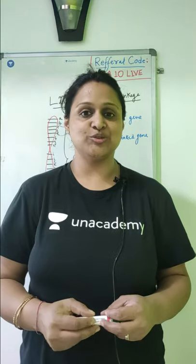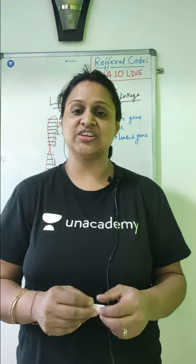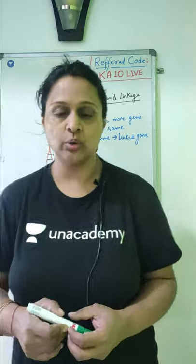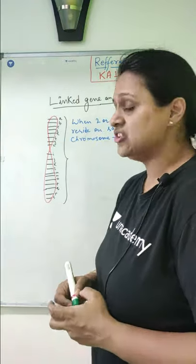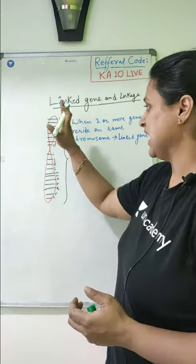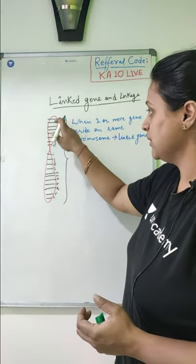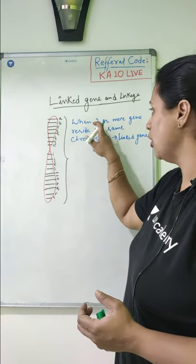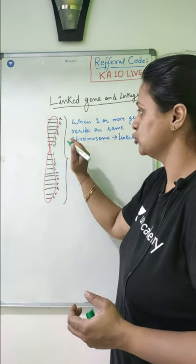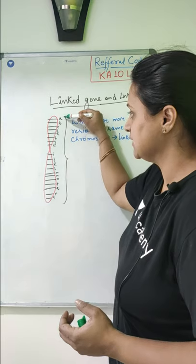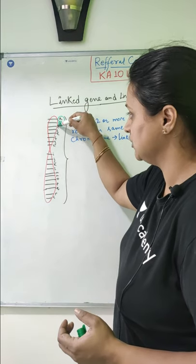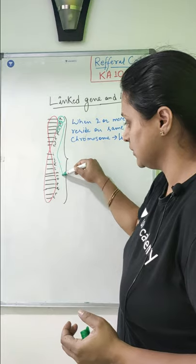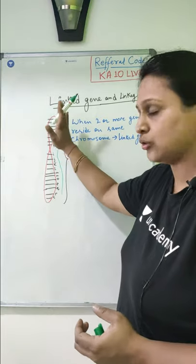Hi guys, this is Khushba Agarwal and in today's video we will understand linked genes and the linkage concept. So, linked genes — basically what happens in a chromosome? When two or more genes reside on the same chromosome, like we can see gene A, gene B, gene C, gene D — all these genes are present on the same chromosome.